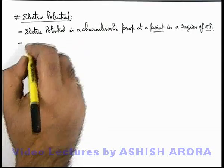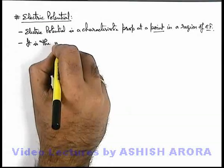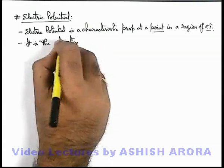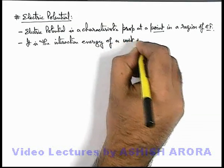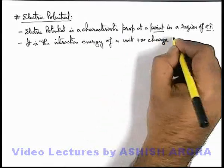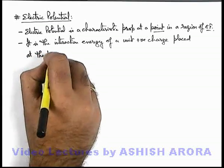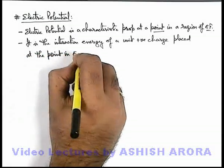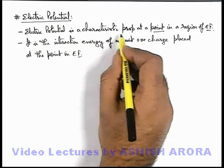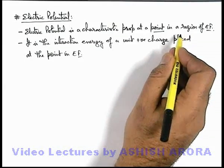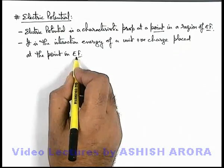Another point about electric potential: it is the interaction energy of a unit positive charge placed at that point in the electric field. In the first point we wrote that electric potential is a characteristic property at a point in the electric field, and actually its numerical value is the interaction energy of a unit positive charge placed at that point in the electric field.